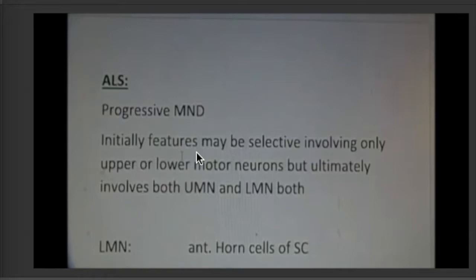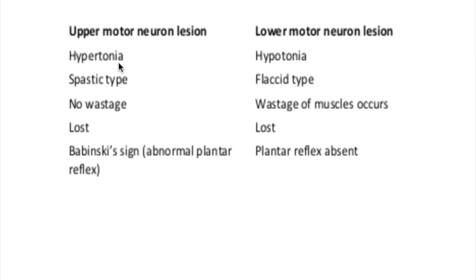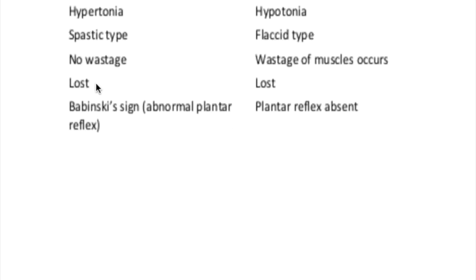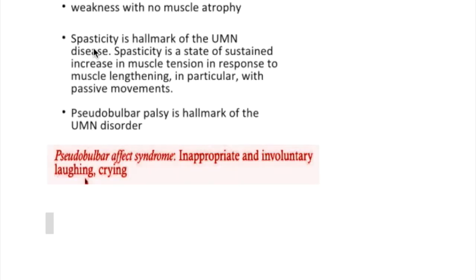Initial features may show selective involvement of only the upper or lower motor neurons, but ultimately both are involved. Both types of lesions may be present even in one limb. Features of upper motor neuron lesions are hypertonia, hyperreflexia, and spasticity. Spasticity is the hallmark of the upper motor neuron lesion — it is a state of sustained increase in muscle tension in response to muscle lengthening.